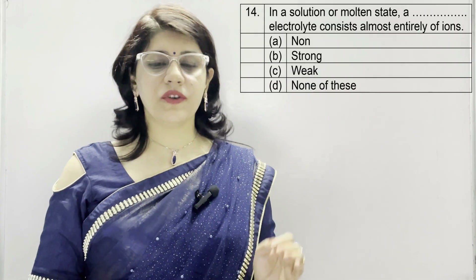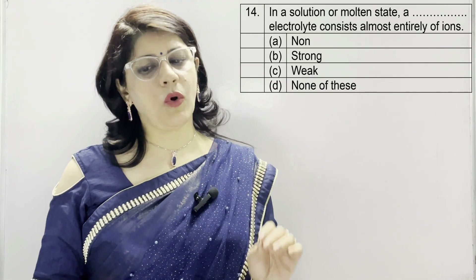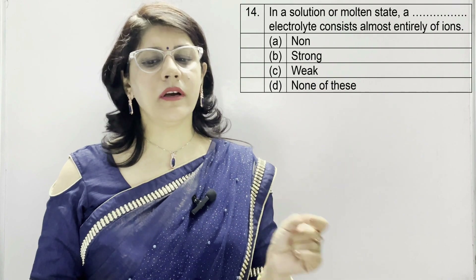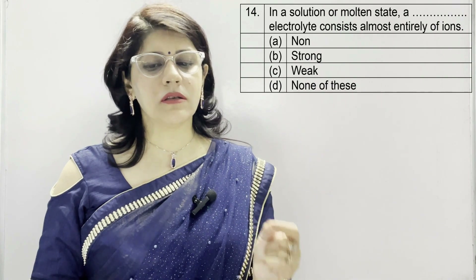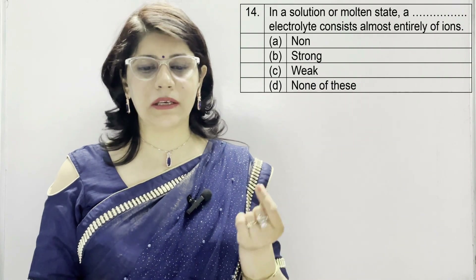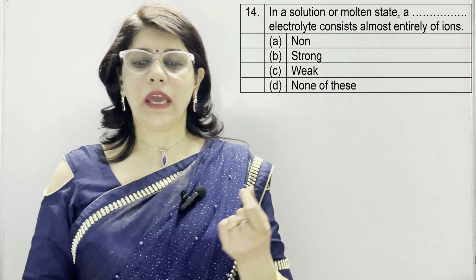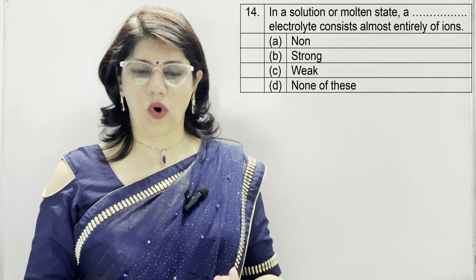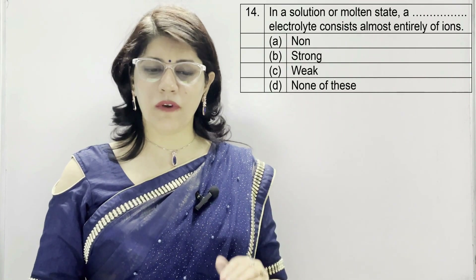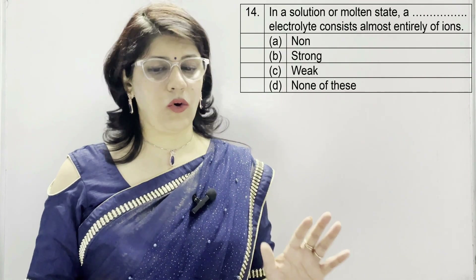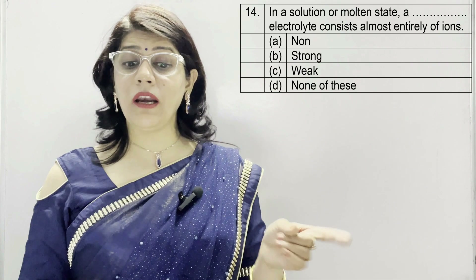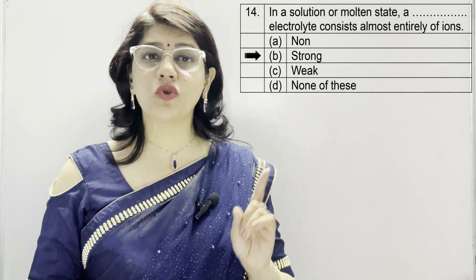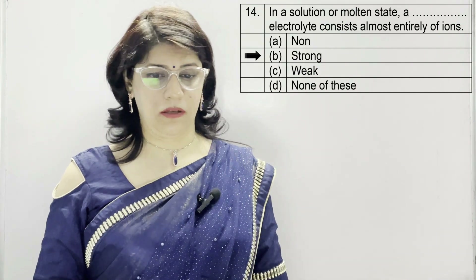In question number 14: in a solution or molten state, a dash electrolyte consists almost entirely of ions. Option A: non, B: strong, C: weak, D: none of these. Consisting entirely of ions means it is a strong electrolyte — correct option is B.